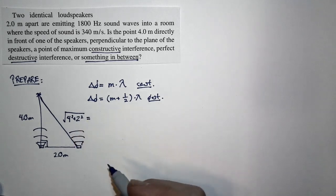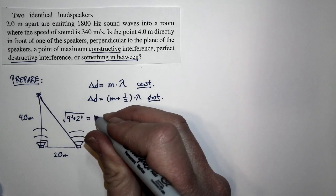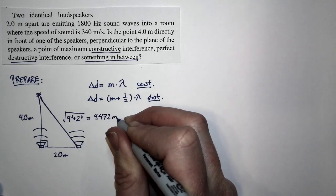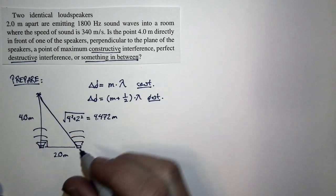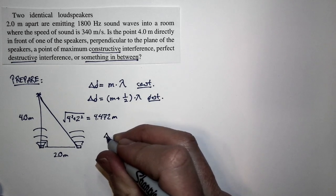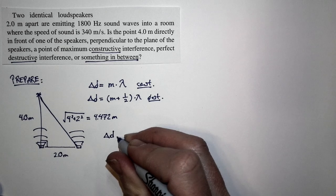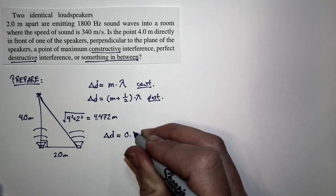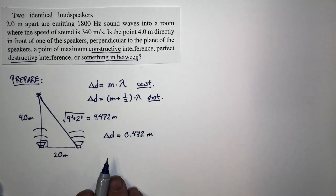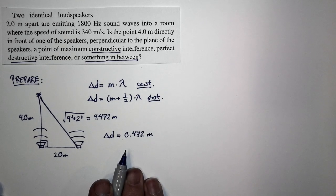We'll keep some extra significant figures here. We get 4.472 meters. So for this situation that we've sketched right here, the difference in distance, the path length difference from the two speakers, is 0.472 meters. That's going to be an important number for us.